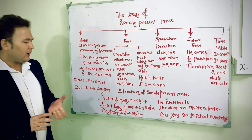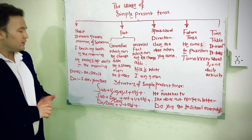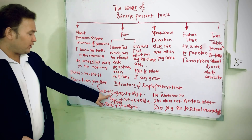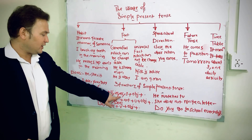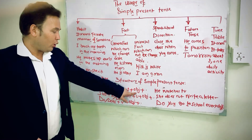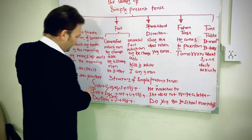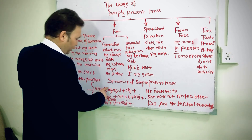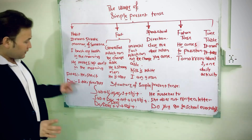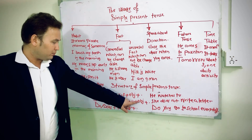Now, the structure of simple present tense is quite easy. First we have subject, then we have verb — adding 'es' or 's' only for the third person: he, she, it — then we have object. For example: 'He watches TV' — 'he' is the subject, 'watch' is the verb with 'es,' and 'TV' is the object.